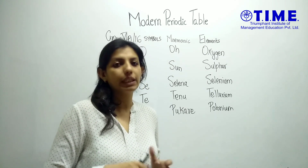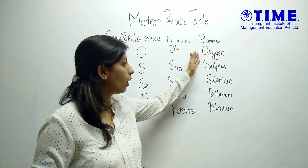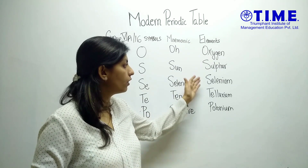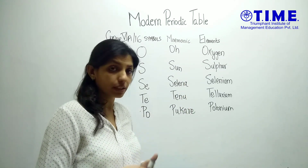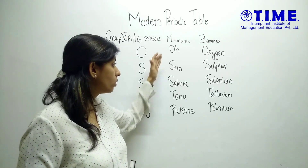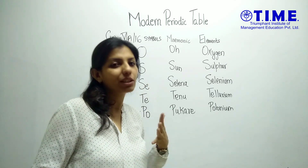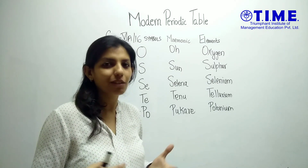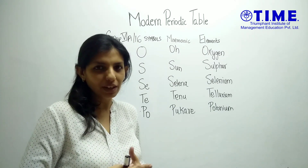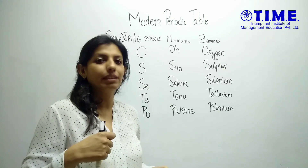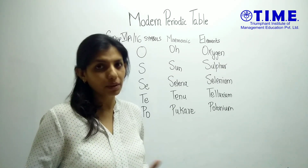Now let's look at the mnemonics for Group 16 or 6A. The elements in this group are oxygen, sulfur, selenium, tellurium and polonium. The mnemonic for this group is: 'O sun, Selena, tenu pukhari.' We have a mix of Selena and some Punjabi, and this is how we'll remember Group 16. You can change it the way you like and build your own mnemonic.